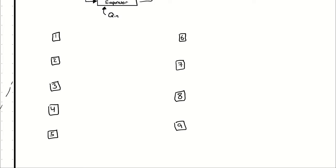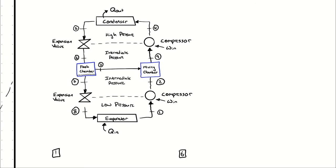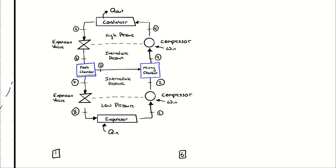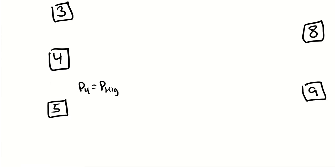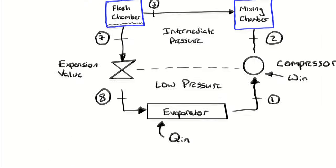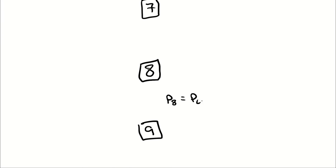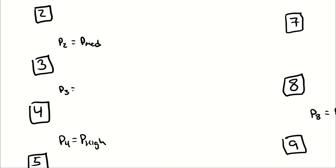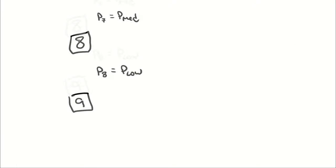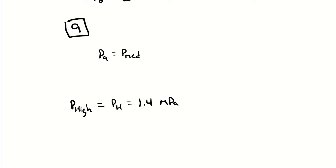Because we're looking up enthalpy for R134A, we're going to need two independent intensive properties to drive that lookup in the tables. The first independent intensive property I have for all nine state points is the pressure. I was given three pressures: 1.4, 0.4, and 0.1 megapascals, corresponding to the high pressure, the intermediate pressure, and the low pressure. So the first thing I'm going to do is populate all nine pressures. States 4 and 5 are the high pressure; states 1 and 8 are the low pressure; and states 7, 3, 6, 9, and 2 are all at the intermediate pressure.